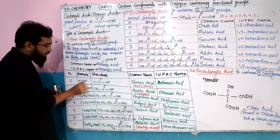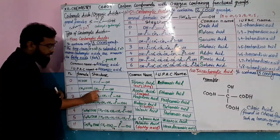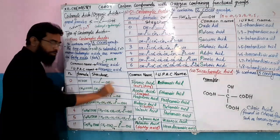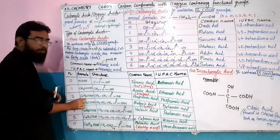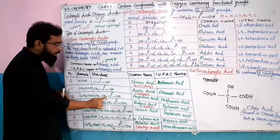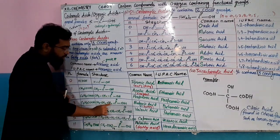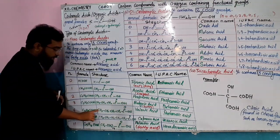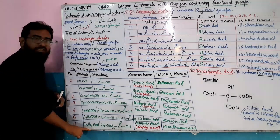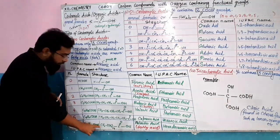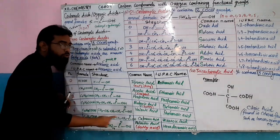Looking at the structures: the simplest is hydrogen attached to the carboxyl group, giving H-COOH. The next component is C2H5-COOH. Continuing the series, we reach C15H31-COOH for the 16-carbon compound.